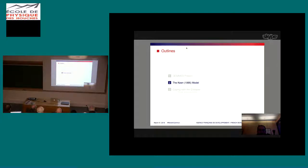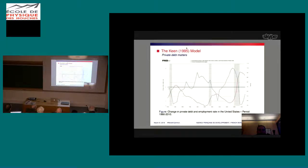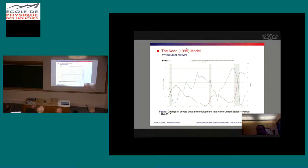The starting point and intuition is that private debt matters. I stress this point because you would hardly find it in a standard neoclassical economic model. Let me provide a number of empirical facts. Here you have the blue curve for the US from 1990 up to today, describing the evolution of the ratio between private debt and GDP.